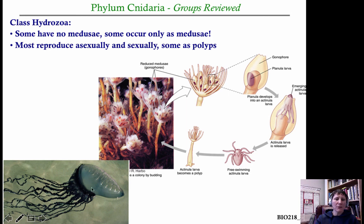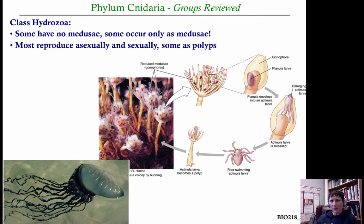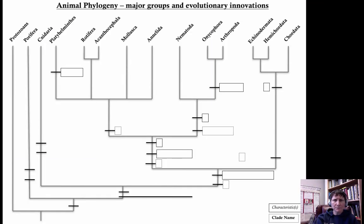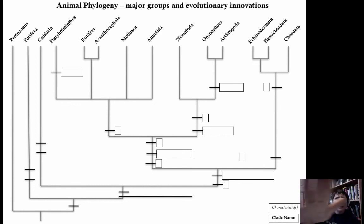The Portuguese man-of-war is a colonial organism where the medusal form is literally like a balloon, and then there are tentacles descending down. On the underside, there are a number of different polyp colonies living together: feeding colonies, reproducing colonies, and defensive colonies — all living together in this colonial fashion and floating around ocean environments.